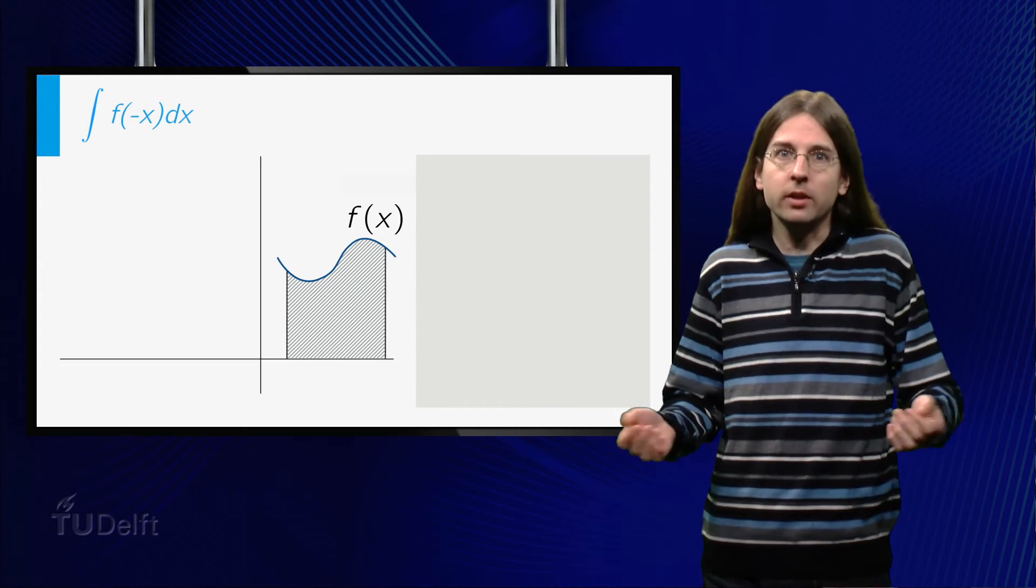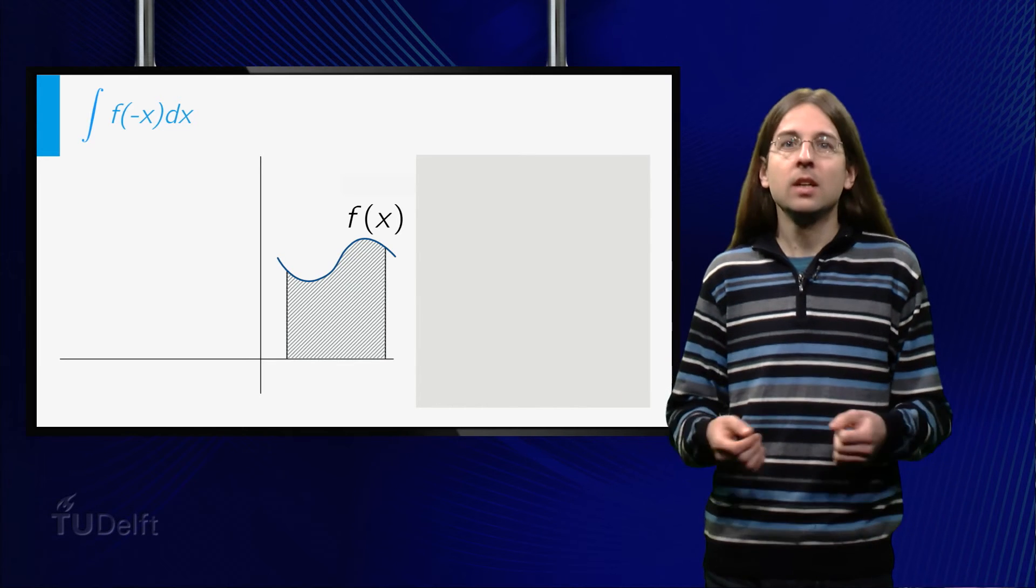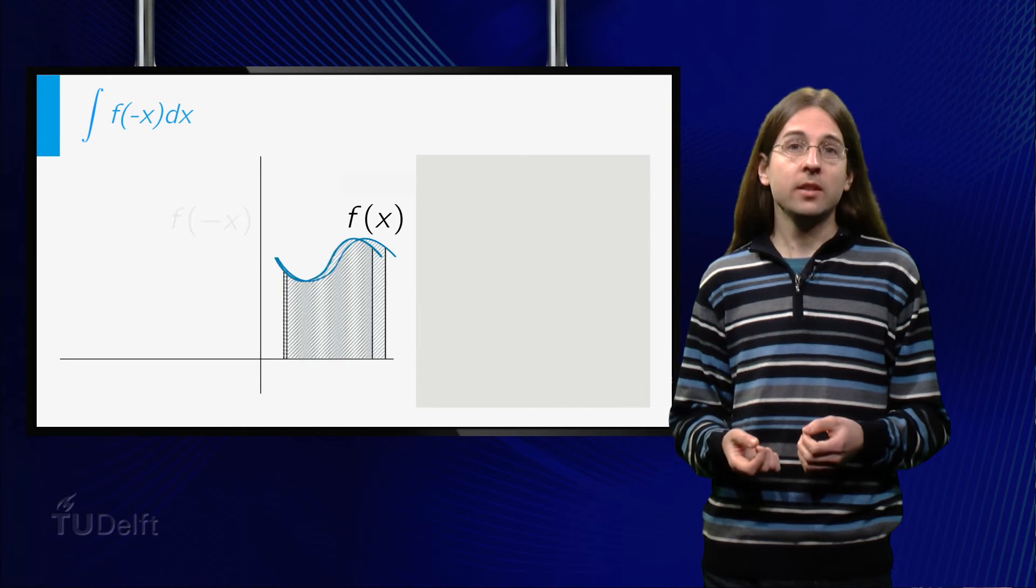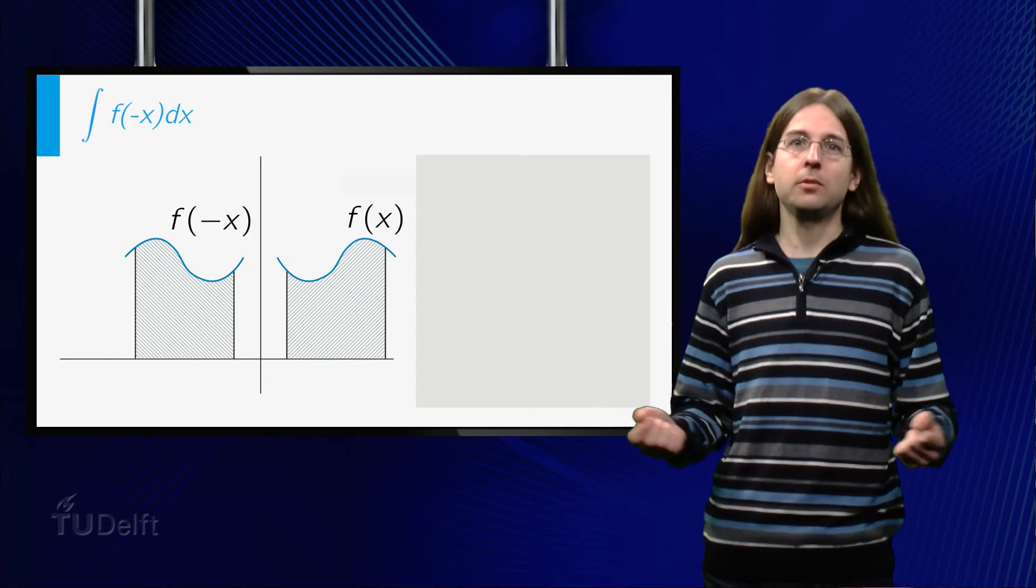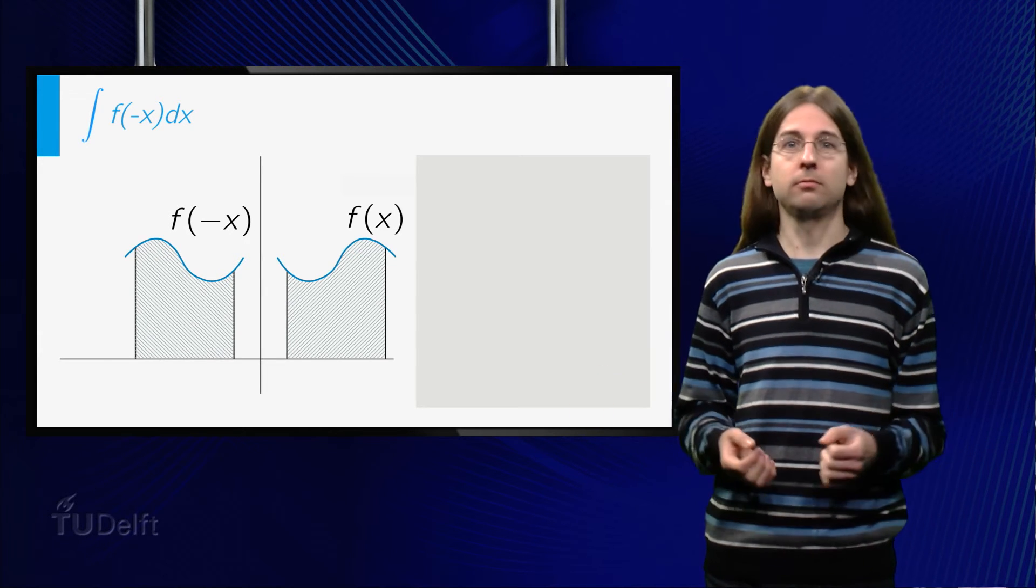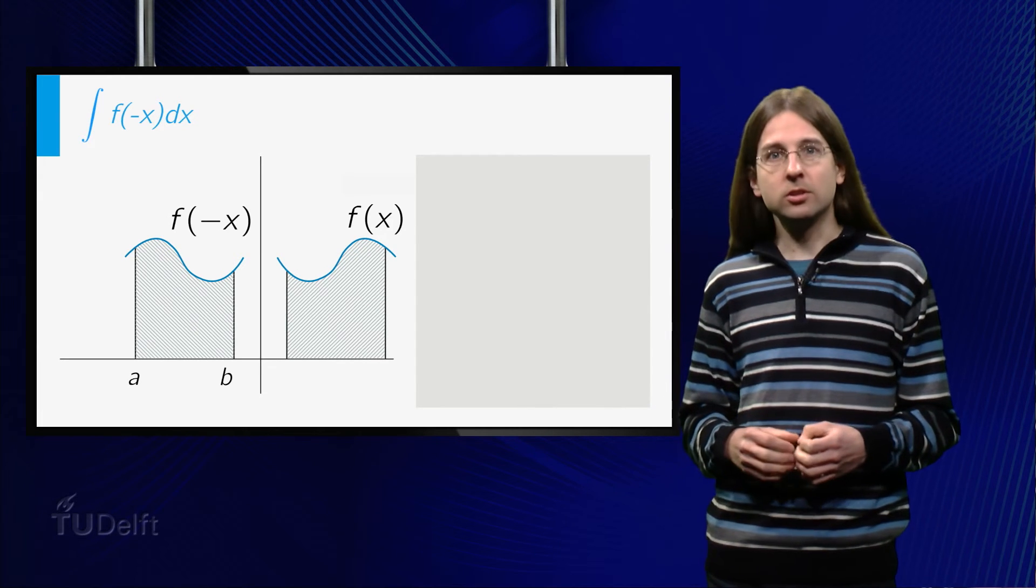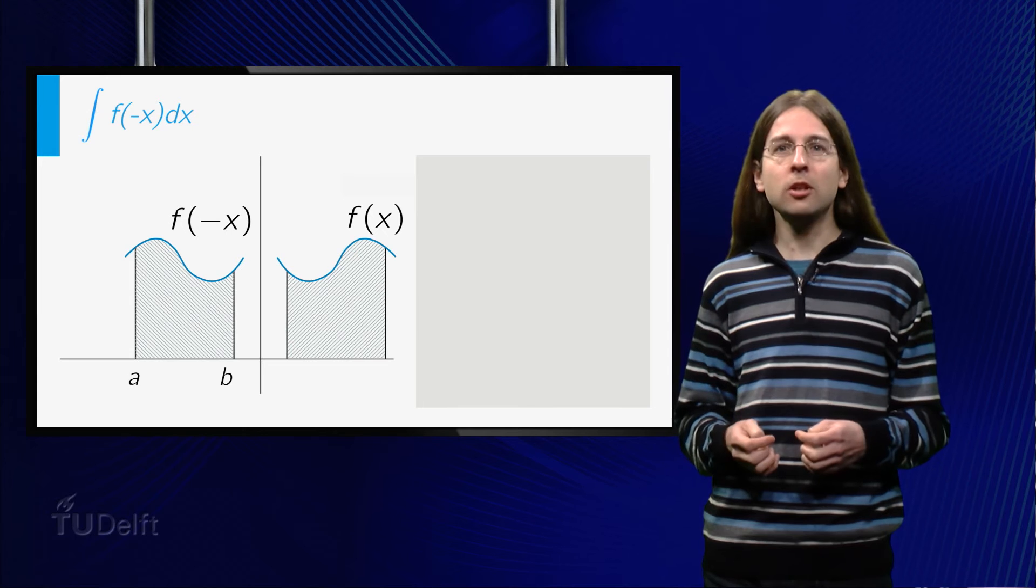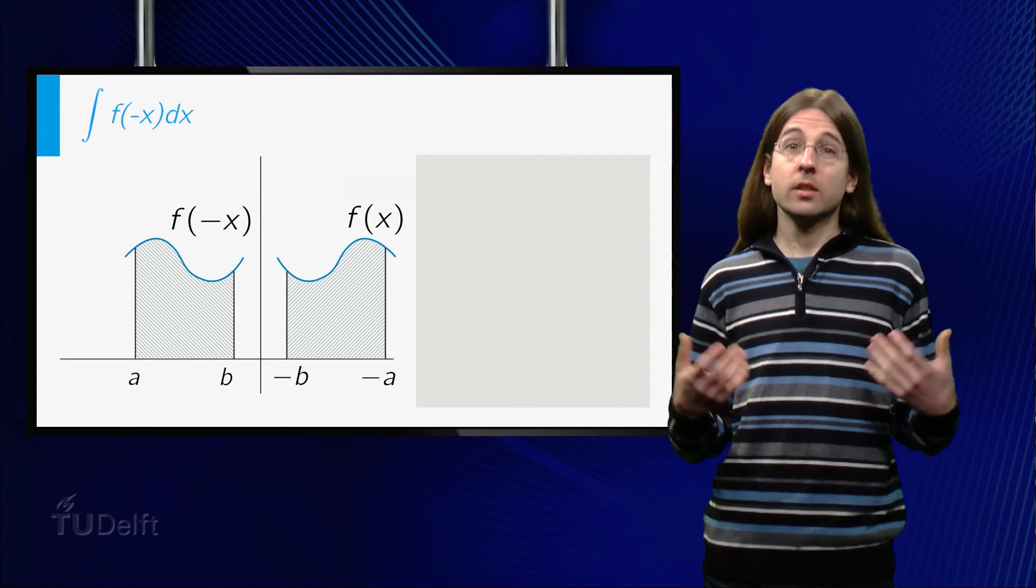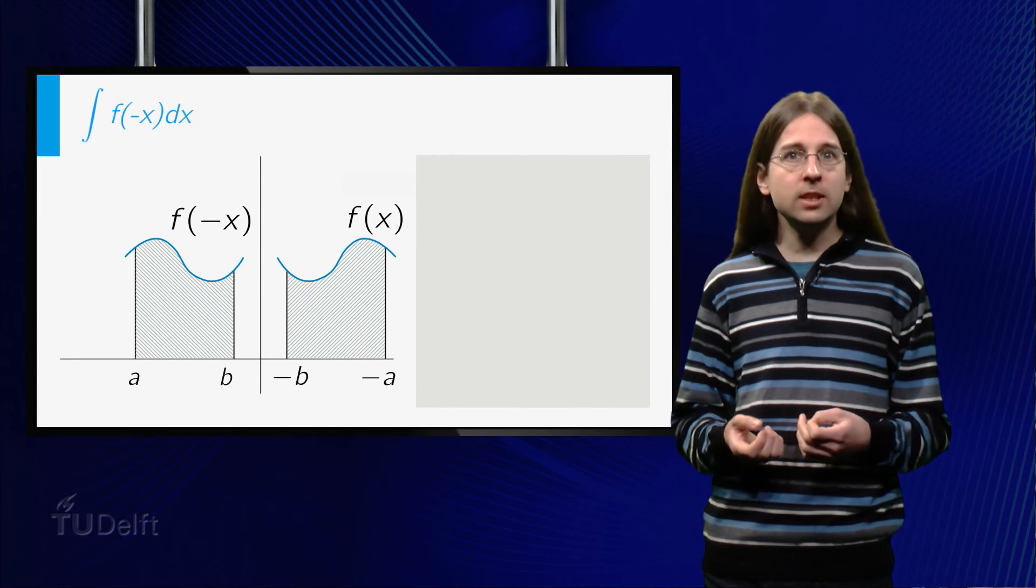One might wonder what happens if c is negative. Well, let's consider the graph of f of negative x. This is the reflection of the graph of f of x in the y-axis. The area under the curve remains equal. However, notice that the order of the starting point and the end point have been interchanged. Thus, we have to add a factor minus 1 to account for this change.